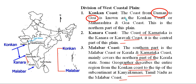But according to most geographers, there are three subdivisions: the northern part is Konkan, the central part is Kannada, and the southern part is Malabar Coast. Konkan mainly covers Maharashtra and Goa; Kannada mainly covers Karnataka; and Malabar mainly covers southern parts of Karnataka and northern parts of Kerala.